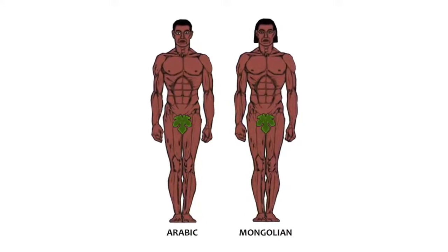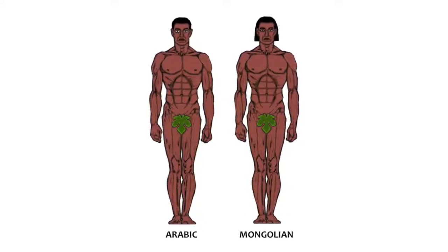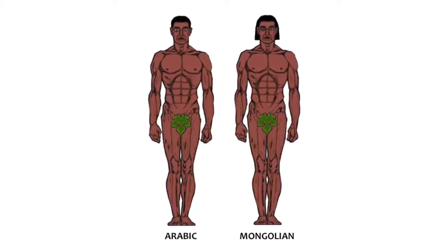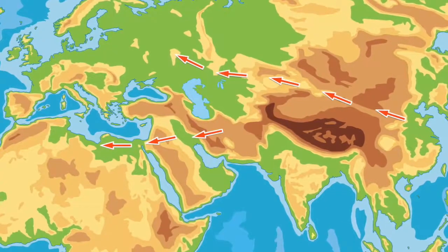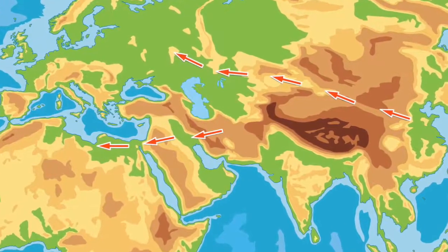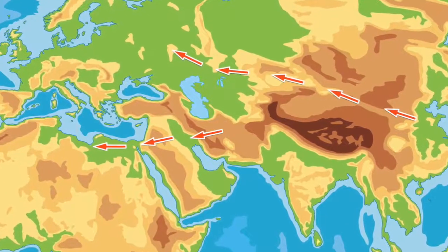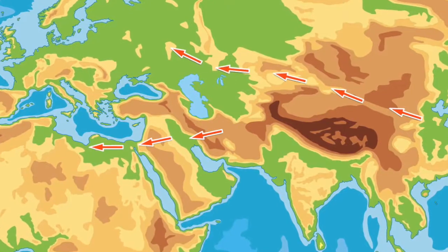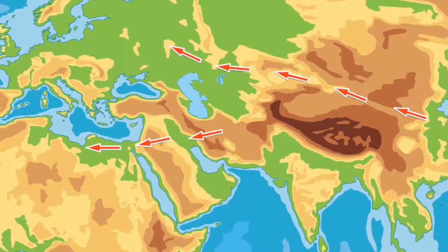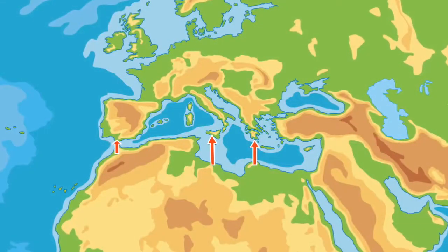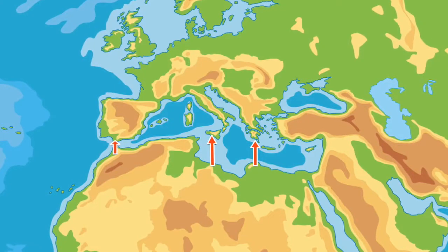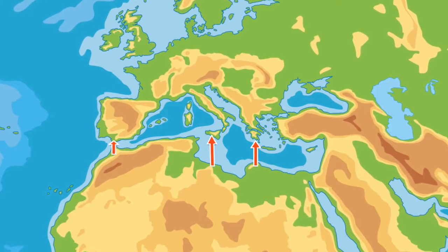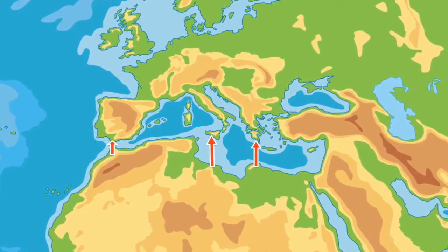Nordics mixed with Indians in Arabia and with Far East Asians in Far East Asia. With this intermixing arose the Arabic and Mongolian breeds. These newly formed breeds expanded and moved west — Arabs into North Africa, Mongolians into Eurasia. Arabs in the north of Africa then migrated north into the Mediterranean zones we know as Greece, Italy, and Spain.